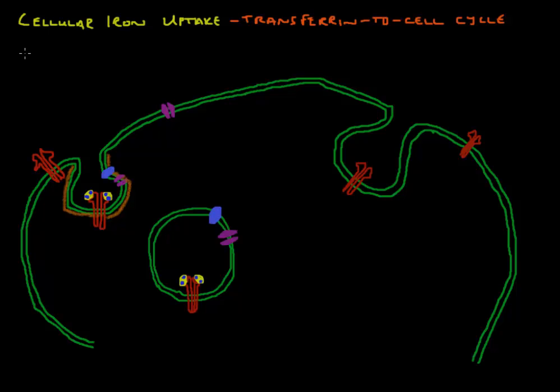Transferrin is the carrier molecule for iron in the bloodstream, and each transferrin molecule has two binding sites for iron. So you can have four different forms of transferrin bound to iron. You can have this one here where no iron is bound, and this is called apotransferrin.